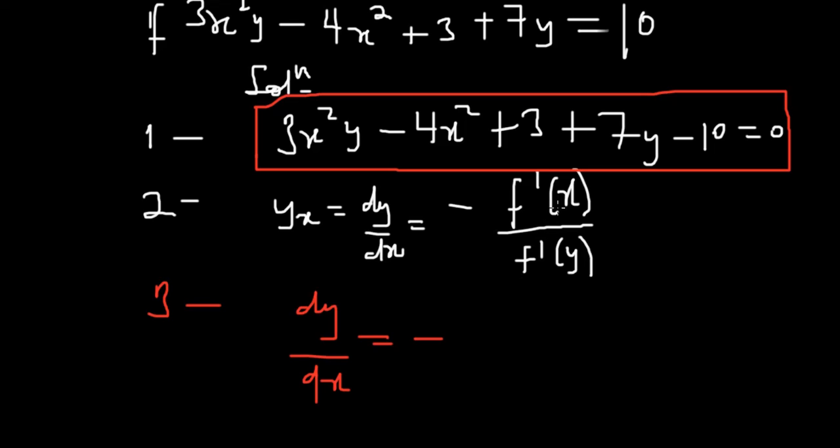For f'(x) it means that you are partially differentiating with respect to x. Partially differentiating 3x²y gives us 6xy. Keep that in bracket because of the negative sign. Then we have minus 4x² which gives us minus 8x.